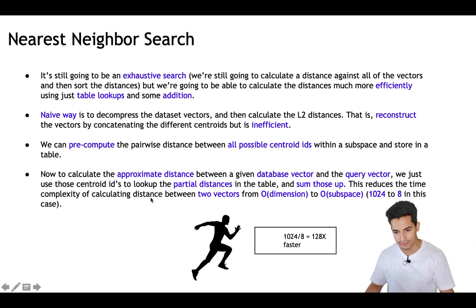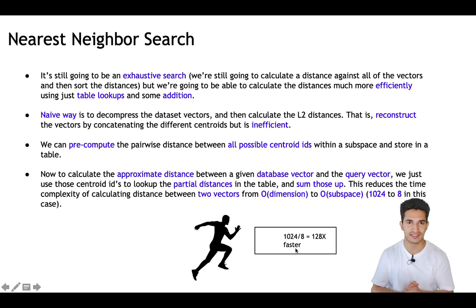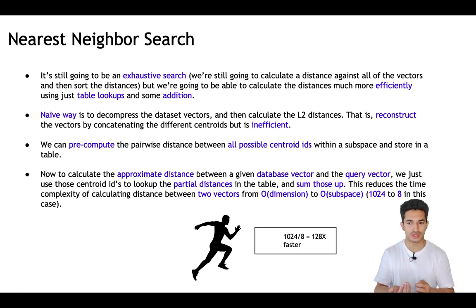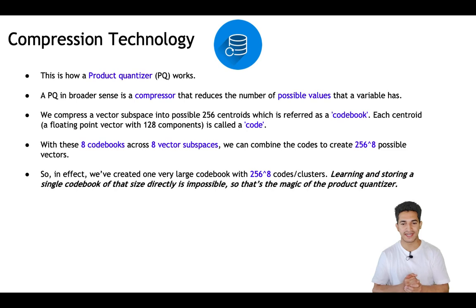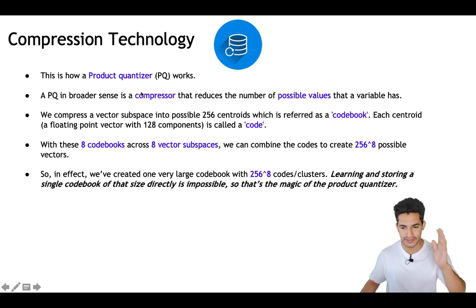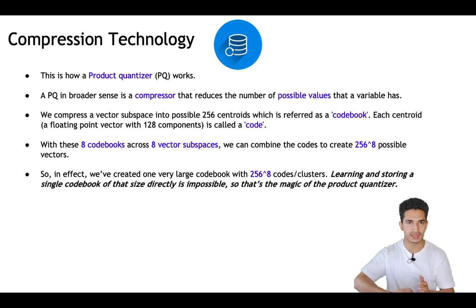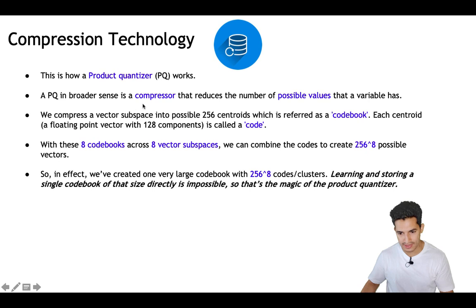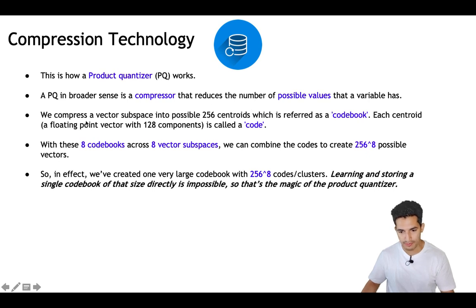This reduces the time complexity of calculating the distance between two vectors from O(dimension) to O(subspaces) — from 1024 to 8 in this case — which is about 128× faster. Because of this fast lookup we reduce the time complexity of the exhaustive search, and also because of the data compression we have reduced memory size as well. This is how product quantizer works: divide the big matrix into sub-matrices, use clustering to compress the data, and do a lookup to perform a fast search.